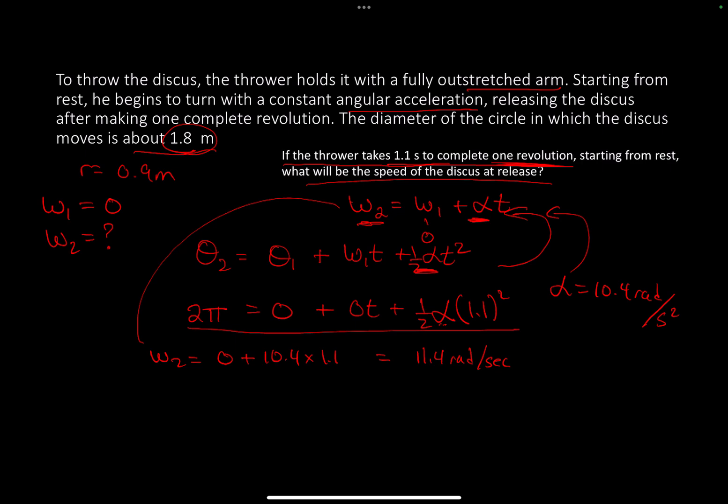The question asks for the speed of the discus at release. I need to convert radians per second into meters per second. So I take 11.4 radians per second.